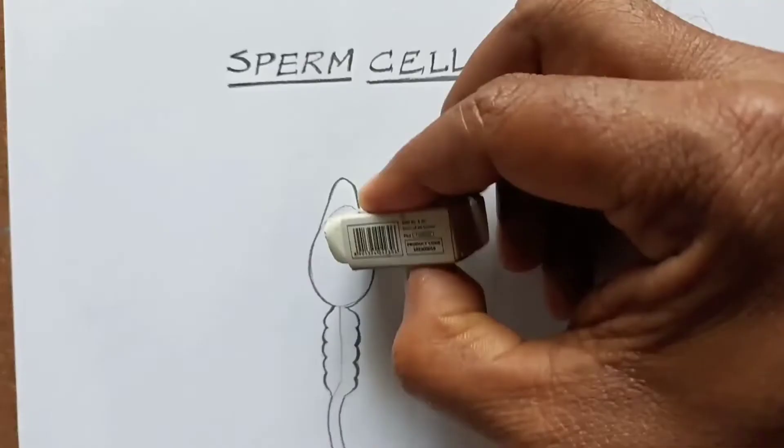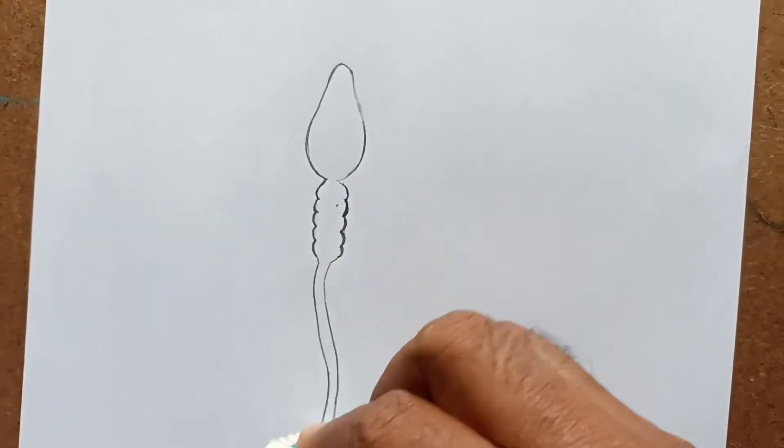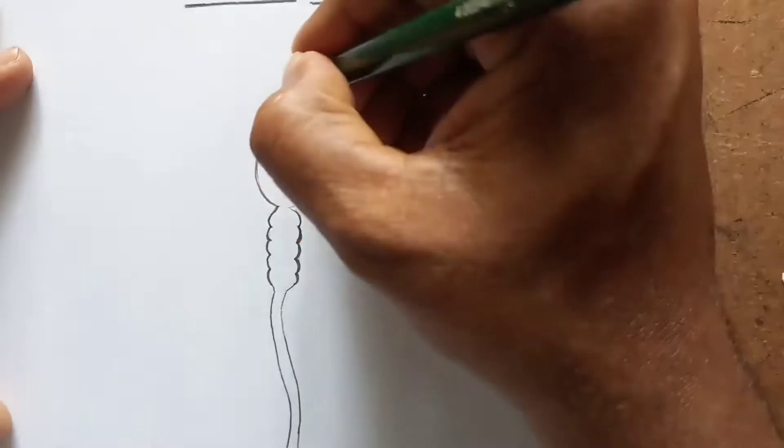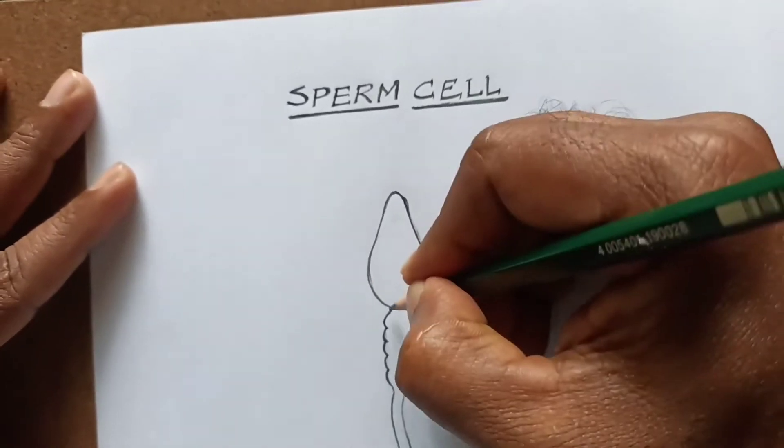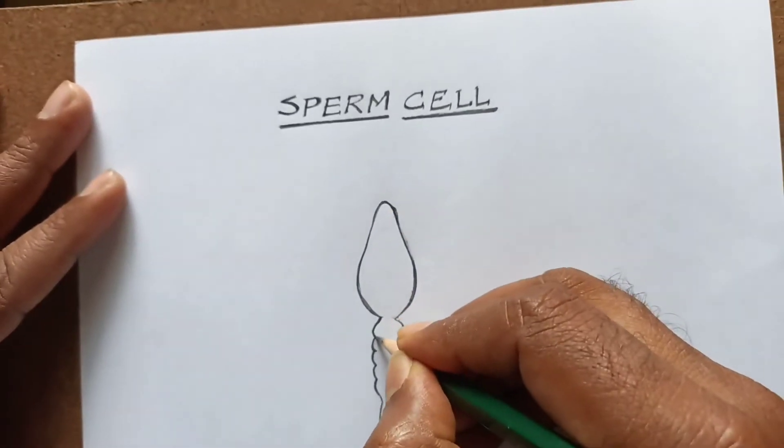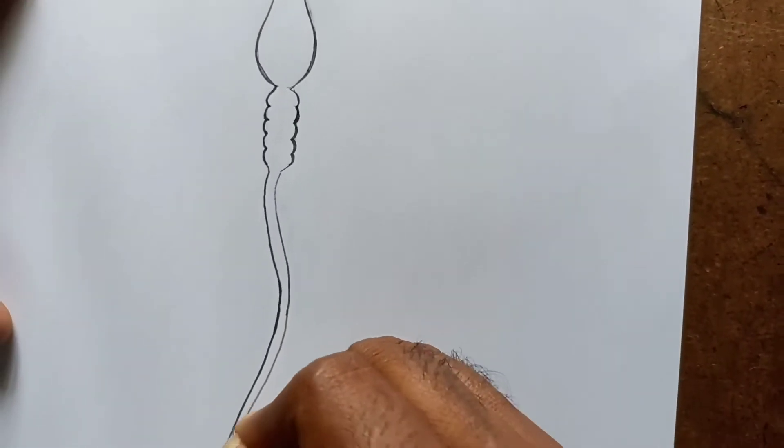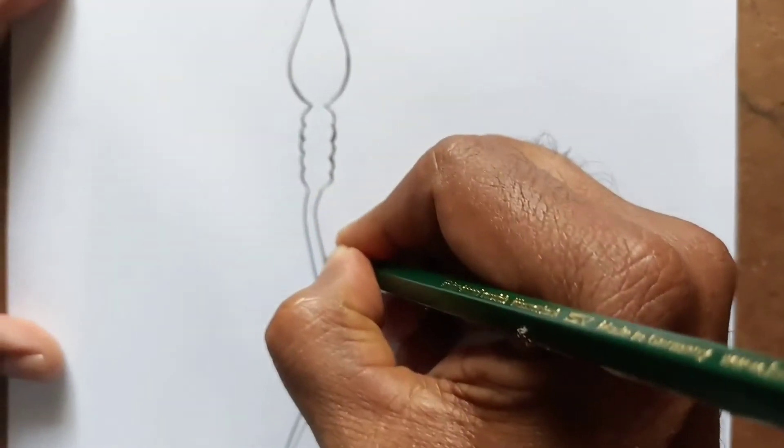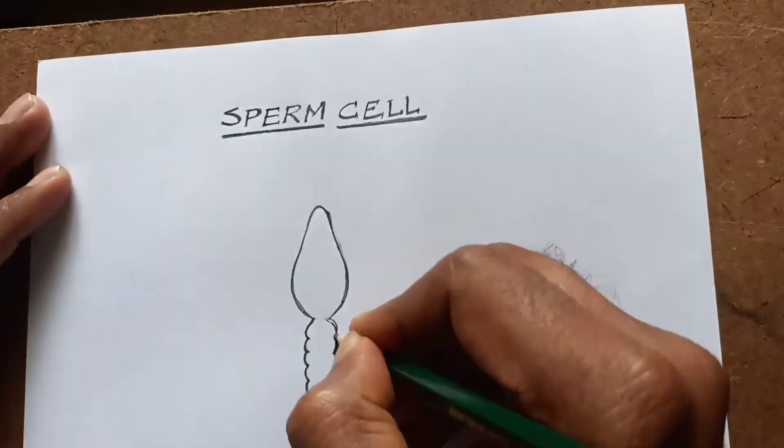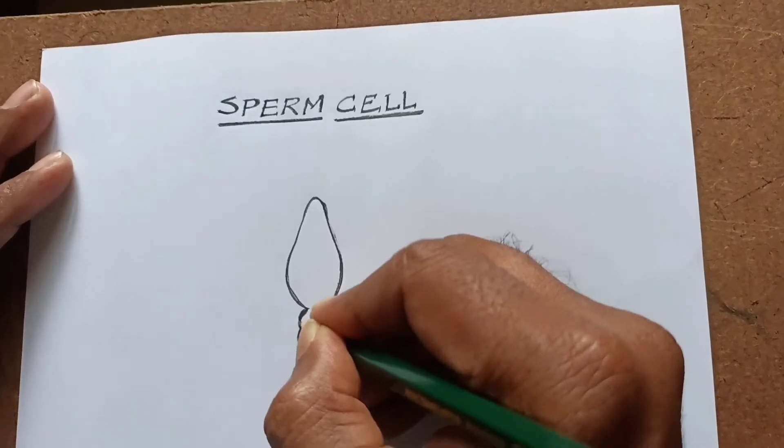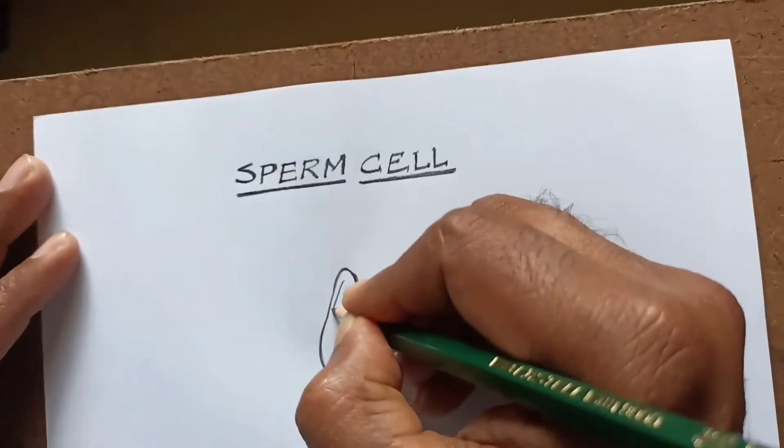After erasing extra portions, you darken it like this.